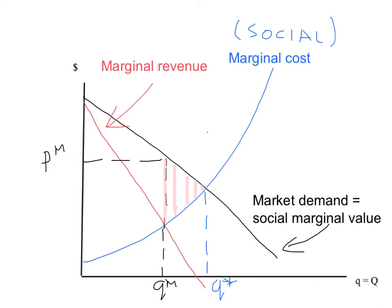That's our deadweight loss triangle for the monopoly, given by this pink shaded area. If you can't remember exactly why that is the deadweight loss triangle, go back to the earlier presentations on welfare economics. The pink shaded area is the monopoly deadweight loss — an amount of social welfare, of benefit, that society forgoes. The monopolist, when it tries to maximise profits, wants to pull back quantity so that it can push up the price. By raising the price and restricting quantity, the monopolist makes more profit than if it kept a lower price and maximised social welfare.